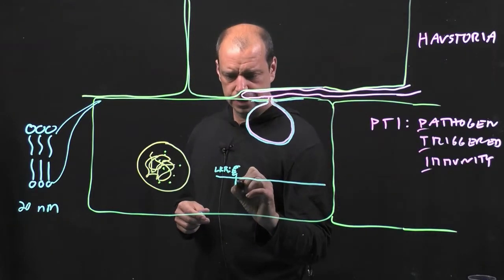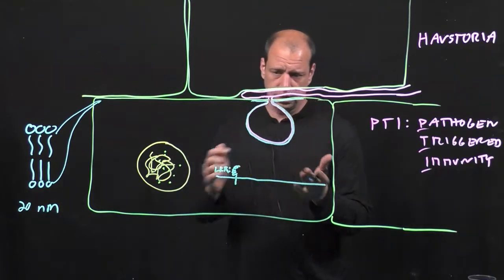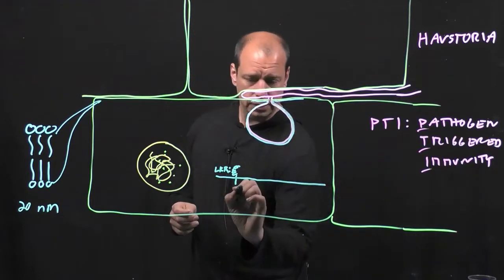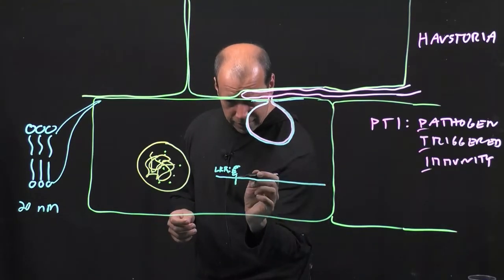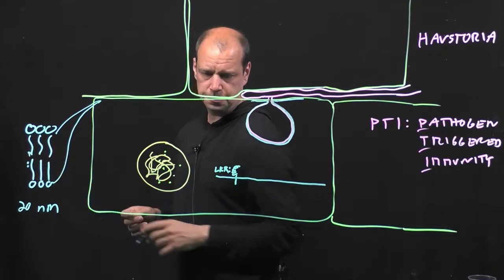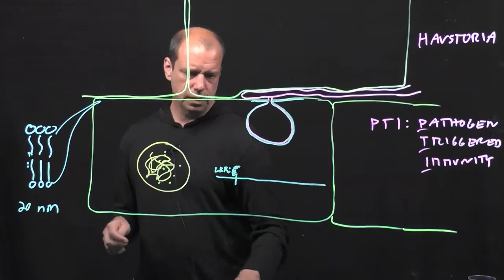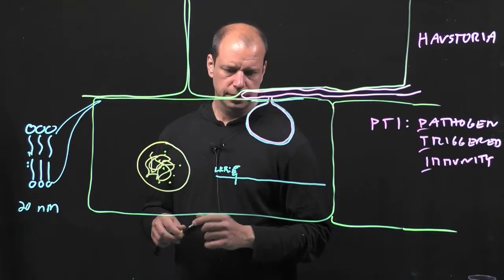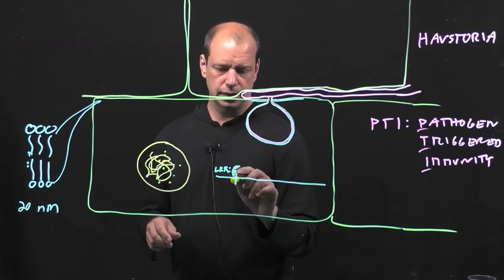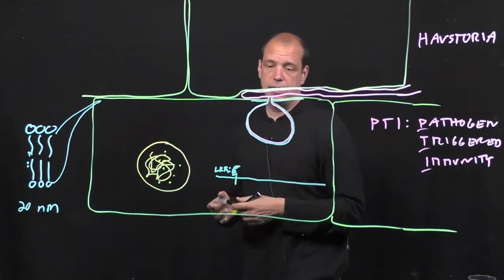And then on the inside, there's a transmembrane domain that holds the protein in the membrane. This part is water-soluble, and this part is water-soluble. The bit in the middle is fat-soluble, so that it sits here. And then you have a signaling domain on the inside. And so, that signaling domain later is able to signal to the nucleus that there's an attack.